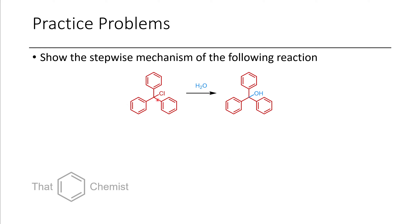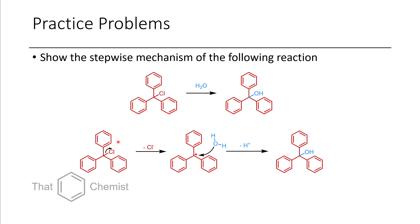In the next problem, we have trityl chloride treated with water. This is an SN1 reaction because this is a tertiary chloride — it has to leave on its own first before the water can attack. The first step is the chloride departs on its own. This tertiary carbocation can then get attacked by water. Subsequent removal of one of those protons, spontaneously or by abstraction by the solvent, affords this alcohol as a product.